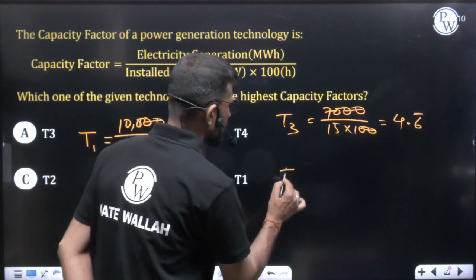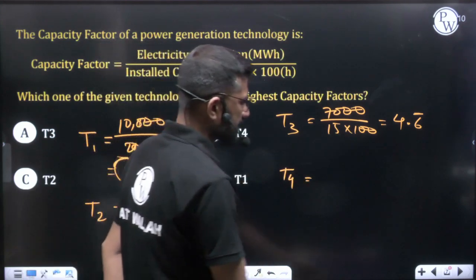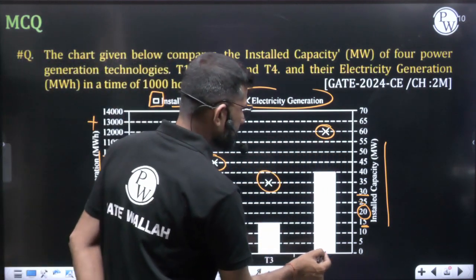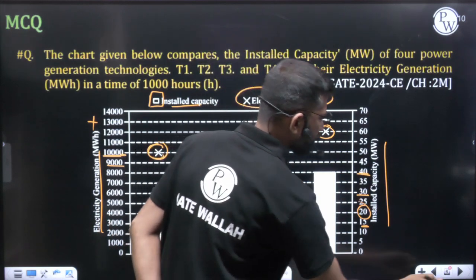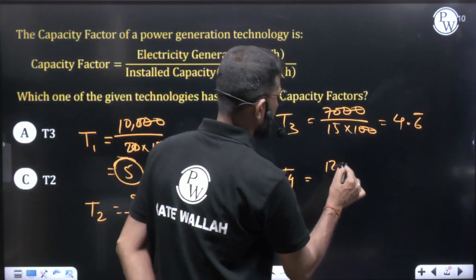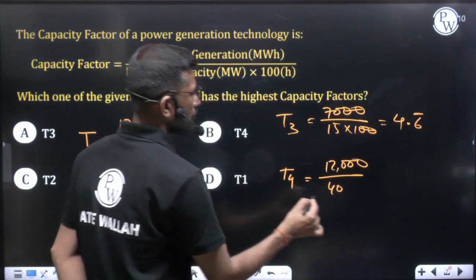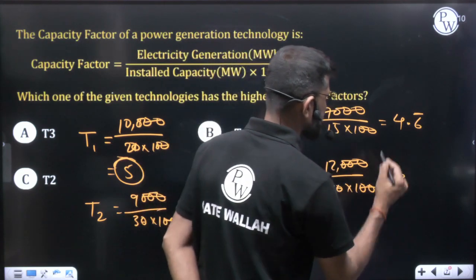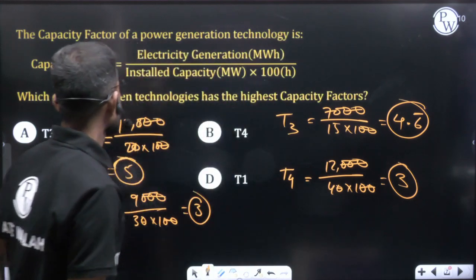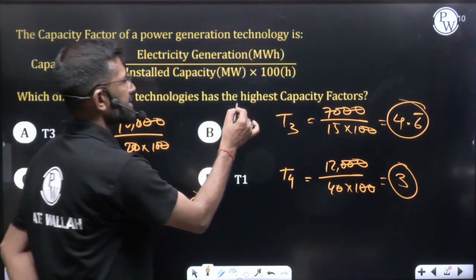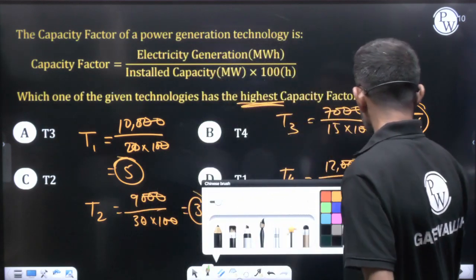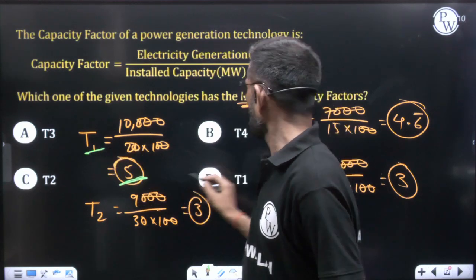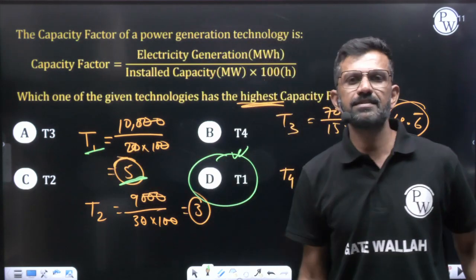For technology T4: electricity generation is 12,000 MWh, and installed capacity is 40 MW. So capacity factor = 12,000 divided by 40, multiplied by 100. After cancelling zeros, 12 divided by 4 equals 3, giving 30 for T4. Comparing all values — T1 is 50, T2 is 30, T3 is 46.6̄, T4 is 30 — the highest capacity factor is T1, which corresponds to option D.